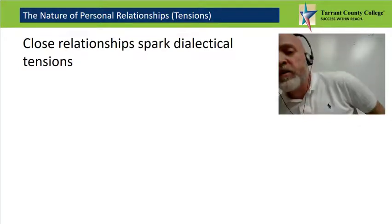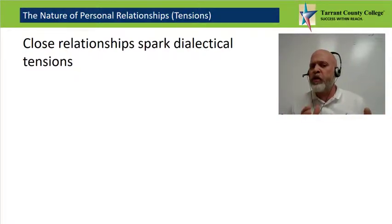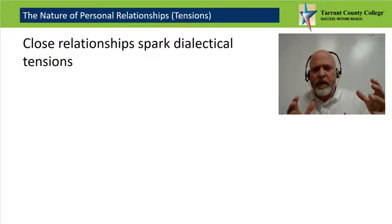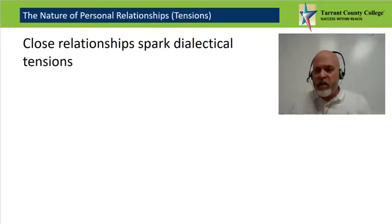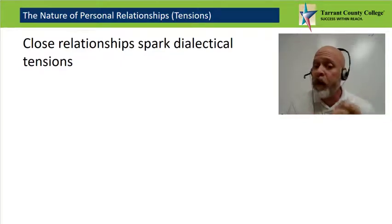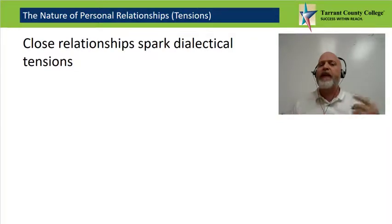Close relationships can also spark dialectical tension — the feeling of wanting to be closer to someone while also wanting to maintain your individuality. For example, you might wish for more self-disclosure but still want to keep some thoughts private, or you might enjoy novelty and surprise in a relationship while also wanting it to be stable and predictable. Dialectical tension is a conflict between two important but opposing needs or desires.